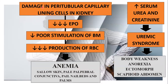As for the structural damage, there would also be damage to the peritubular capillary lining cells in the kidney. Thus, there would be decreased production of erythropoietin, leading to decreased stimulation of the bone marrow. Therefore, there would be lesser production of red blood cells, leading to anemia. This would be manifested as sallow skin, pale palpebral conjunctiva, pale nail beds, and palms.